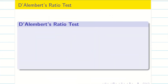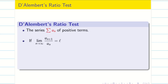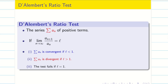Just have a quick recap on the D'Alembert's ratio test. For summation u_n of positive terms, u_(n+1) by u_n should equal l. l is any finite value — the series is convergent when l is less than 1, divergent when greater than 1, and the ratio test fails when l equals 1.